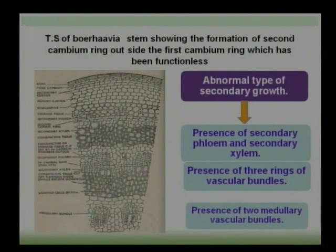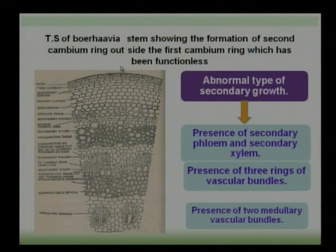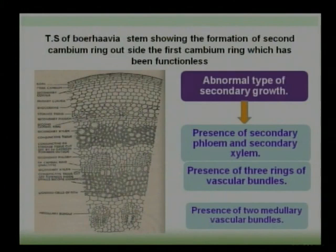About the activity of cambium: the secondary growth consists of two main aspects — medullary rings and abnormal growth. Medullary bundles, out of three rings, two bundles are known as medullary bundles, and these medullary bundles develop some amount of secondary tissue.